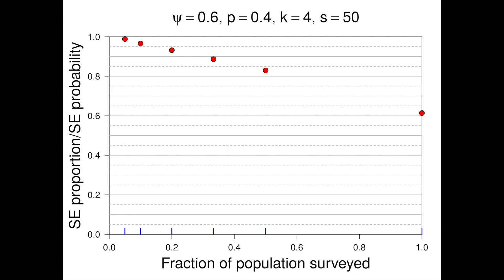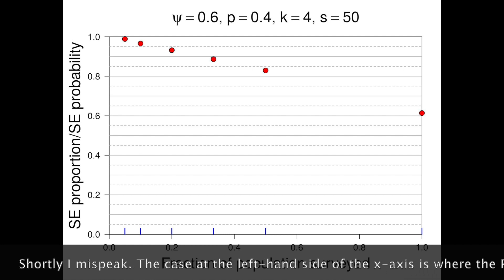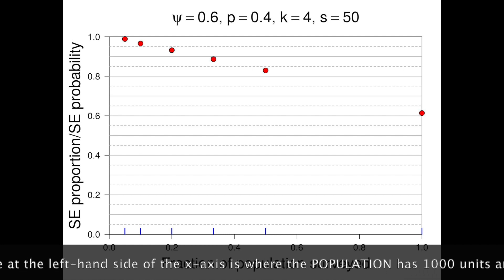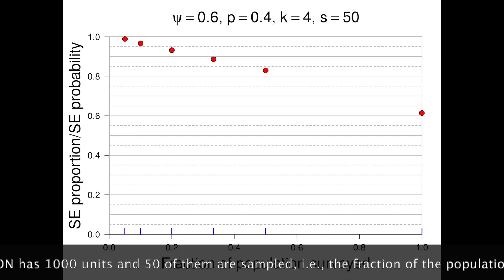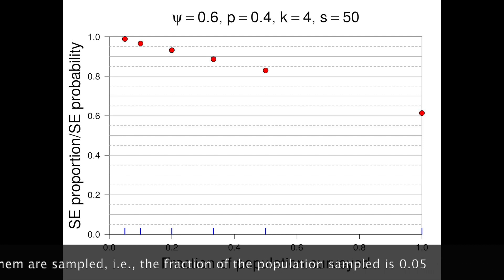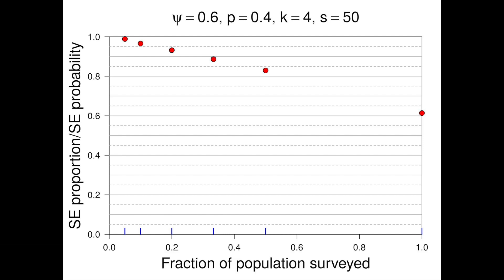As we reduce the fraction of the population that's actually surveyed, the relative standard error approaches one — it becomes pretty much the same size as the standard error for the probability of occupancy. For example, if there are a thousand units and we surveyed 50, that's a fairly small fraction, down the left-hand side of the graph, and the standard error for the proportion of units occupied is about the same as the standard error from the probability of occupancy. This is also related to finite population corrections that people sometimes discuss in standard sampling problems.